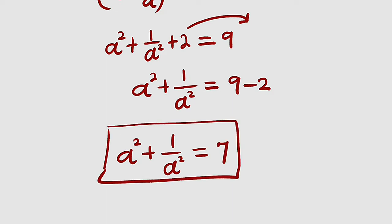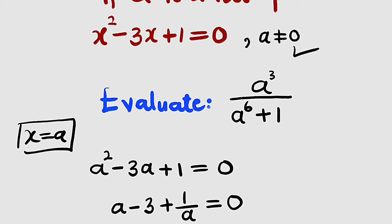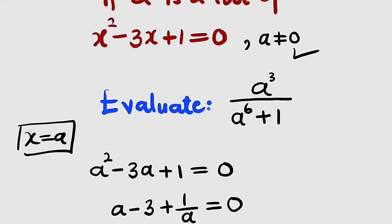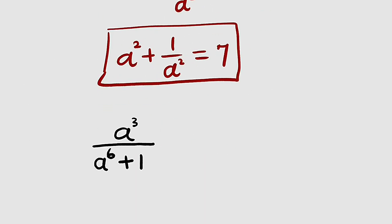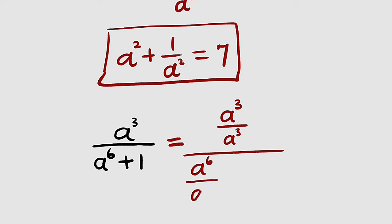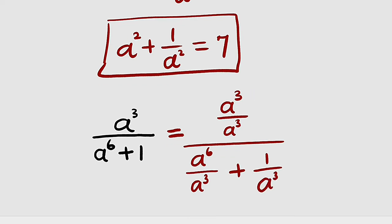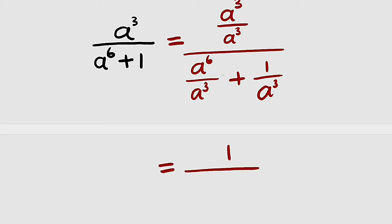Going back to what we are asked to evaluate — a cubed divided by a to the power of 6 plus 1 — I would like to divide both the numerator and denominator by a to the power of 3. The numerator becomes 1, and the denominator becomes a to the power of 3 plus 1 divided by a to the power of 3, which is the same as a to the power of 3 plus 1 divided by a, all to the power of 3.